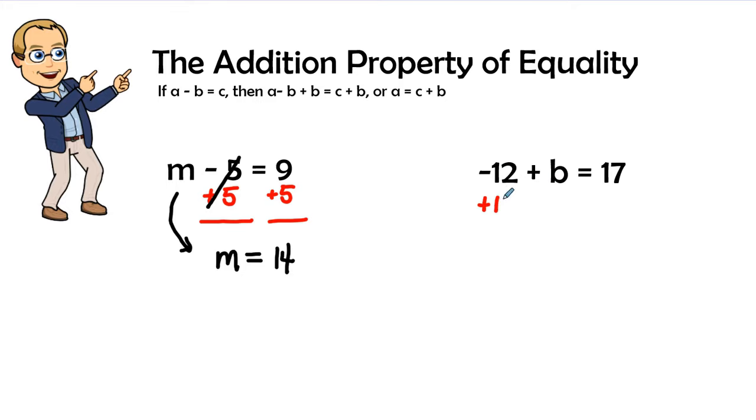So in this addition property of equality, what I do on one side of the equation I will do on the second side of the equation. So I'm going to add 12 to the second side as well.